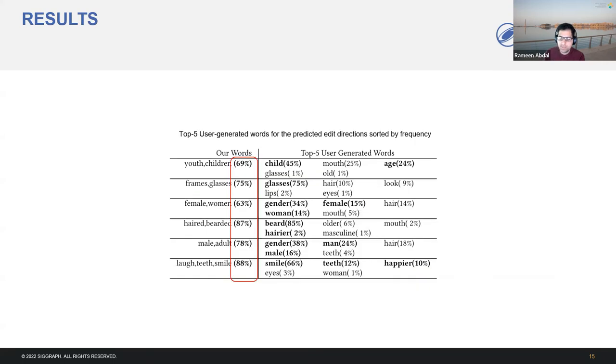We compare these edits to GAN space-based editing. This table represents top 5 user-generated words for the predicted edit directions, sorted by frequency. Notice that our predicted labels and the similar attributes are preferred.